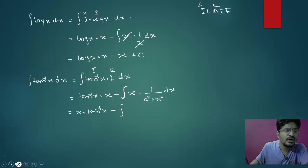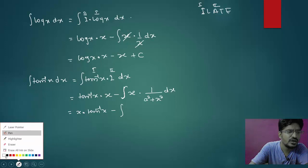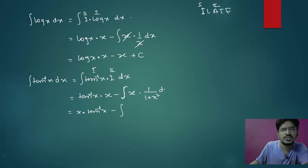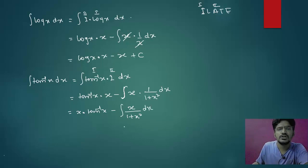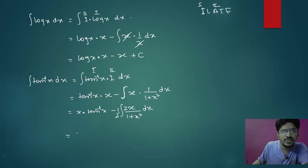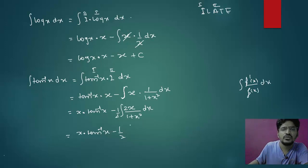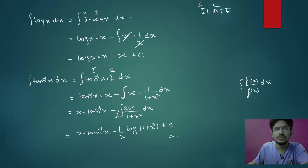So we have x·tan⁻¹(x) minus the integral of x/(1 + x²) dx. Adjust with 2 and 1/2 to get it in the form f'(x)/f(x). This integral becomes (1/2)·log|1 + x²|. Therefore the final answer is x·tan⁻¹(x) – (1/2)·log(1 + x²) + C. These types of problems take one minute or less if you know integration by parts clearly.